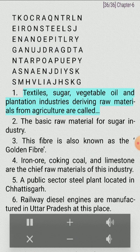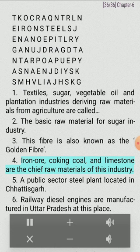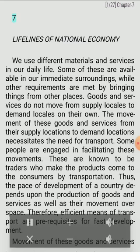Puzzle clues: Textiles, sugar, vegetable oil and plantation industries deriving raw materials from agriculture are called agro-based industries. The basic raw material for the sugar industry is sugarcane. This fiber is also known as the golden fiber (jute). Iron ore, coking coal and limestone are the chief raw materials of the iron and steel industry. A public sector steel plant located in Chhattisgarh. Railway diesel engines are manufactured in Uttar Pradesh at this place.